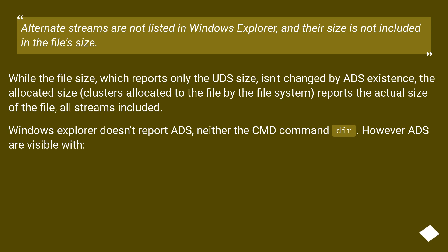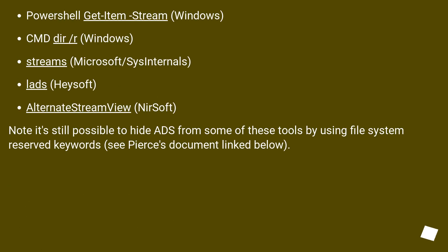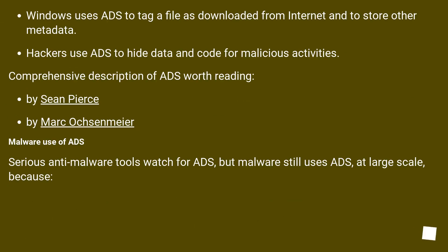Windows Explorer doesn't report ADS, neither does the cmd command dir. However, ADS are visible with PowerShell Get-Item -Stream, Windows cmd dir /r, Windows Sysinternals Streams, Lads by HeySoft, AlternateStreamView by NirSoft. Note it's still possible to hide ADS from some of these tools by using file system reserved keywords. Windows uses ADS to tag a file as downloaded from the internet and to store other metadata. Hackers use ADS to hide data and code for malicious activities.